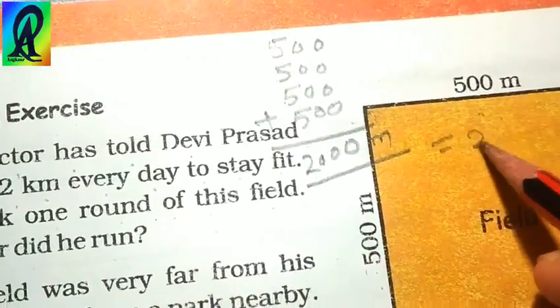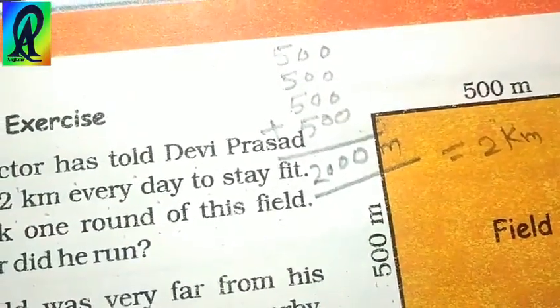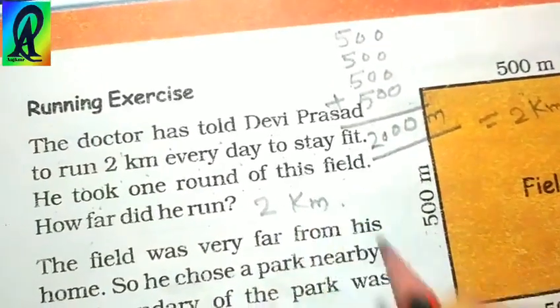500 and 500 is 1000, next 5 and 5 is 10, and 15 and 20. The total is 2000 meters. Here we can say 2 kilometers, because 1 kilometer has 1000 meters. So here Devi Prasad ran 2 kilometers. The answer is 2 kilometers. Hence, how far did he run? It means 2 kilometers.